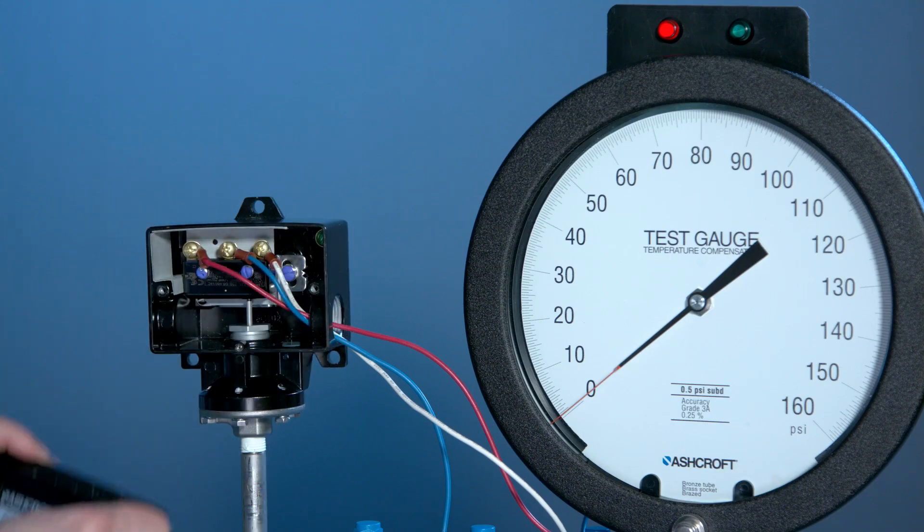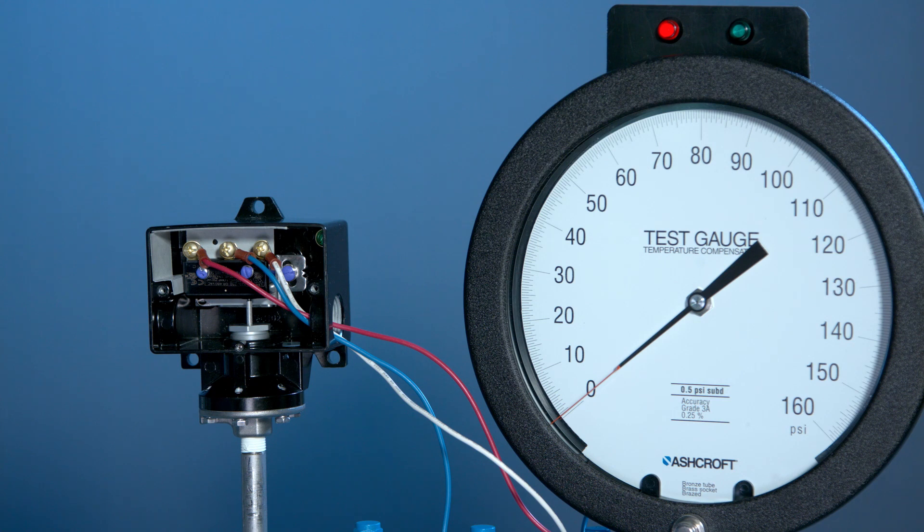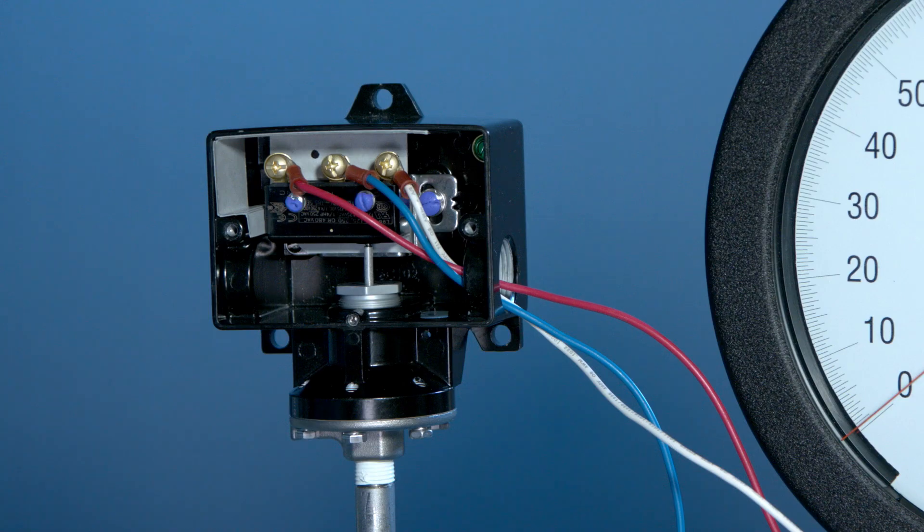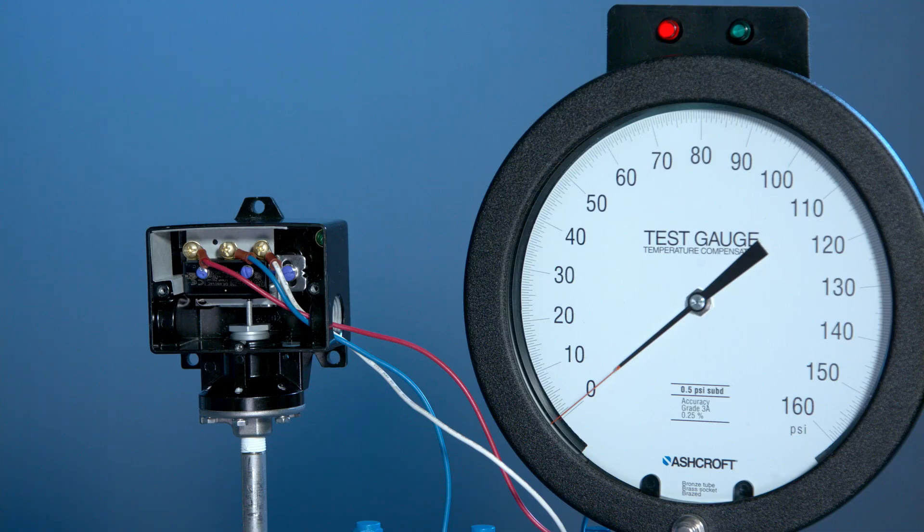We're going to calibrate a B424 switch. We have three wires connected to the micro switch. The white wire is connected to the common contact, the blue wire in the center is connected to the normally open contact, and the red wire is connected to the normally closed contact. This will allow our light box to operate when we open and close the switch.